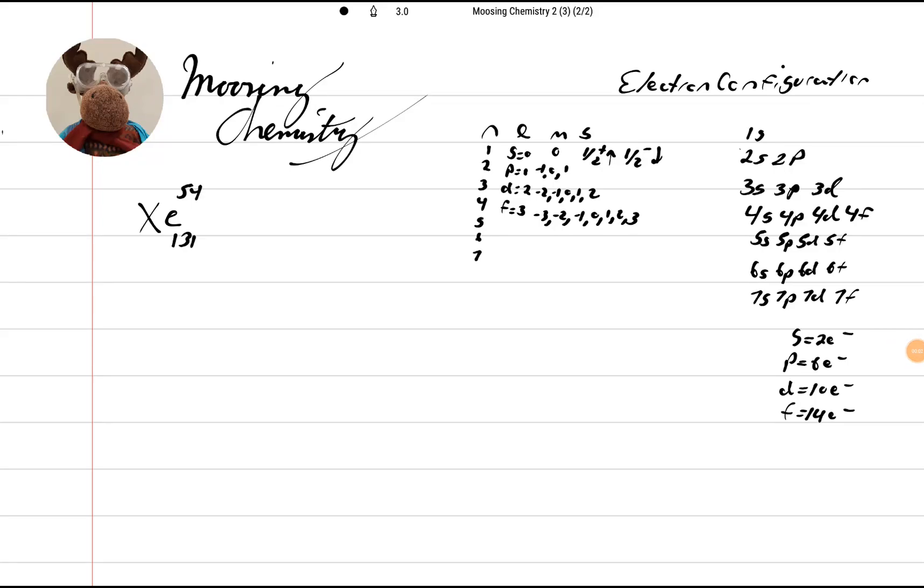Hi, welcome back to Moosin Chemistry. We're going to do electronic configuration day on the element Xenon. It is atomic number 54, and it has an atomic mass unit of 131.29.